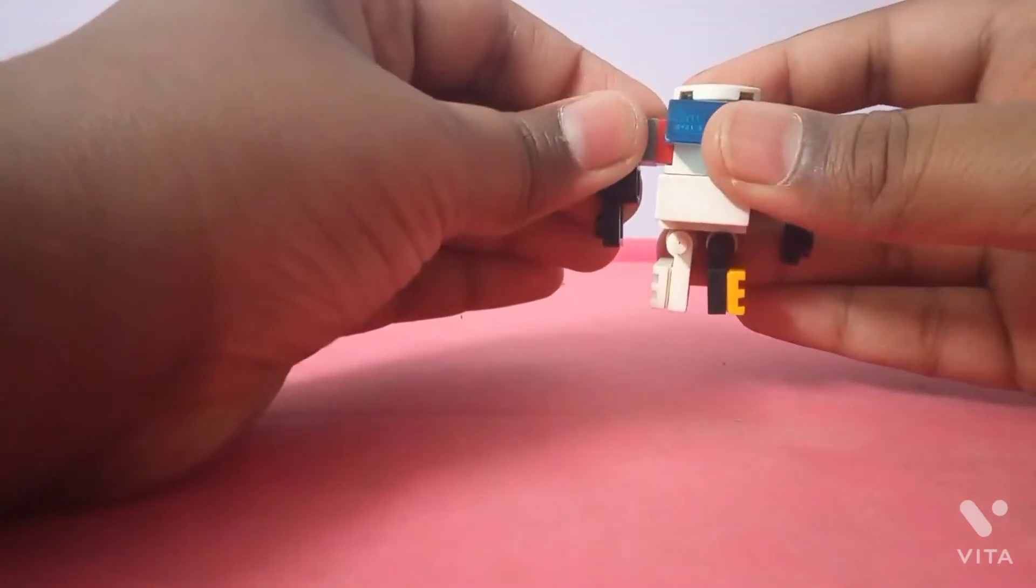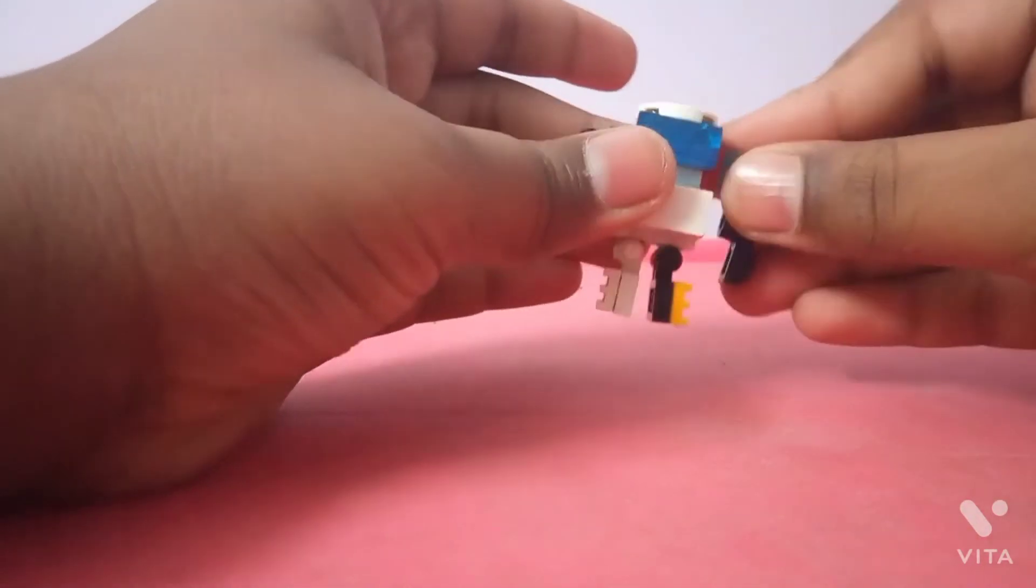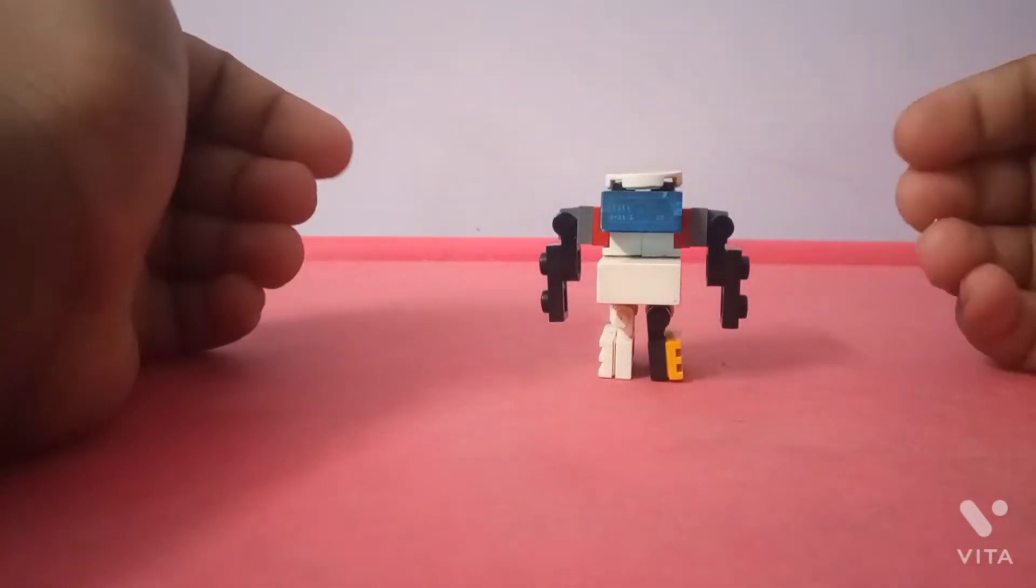Just put the legs back, pull the arms a bit, and boom. He's in his robot form.